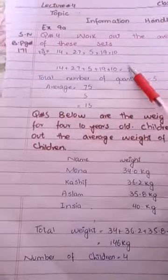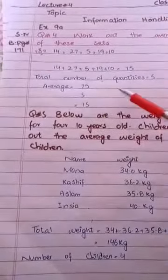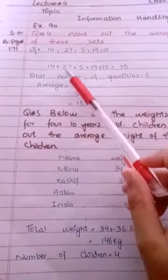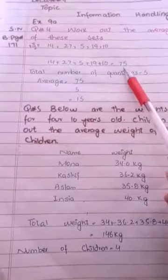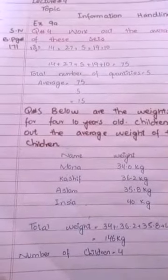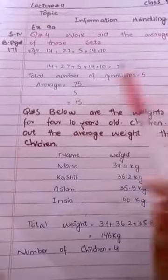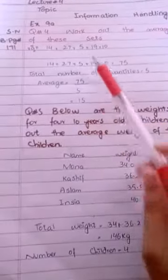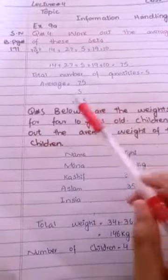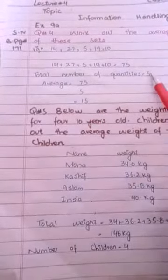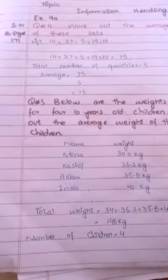Average find out करने के लिए जो हमारे पास quantities हैं उन्हें add करेंगे और जितनी number of quantities हैं उस पर divide कर देंगे। 40 plus 27 plus 5 plus 19 plus 10 = 75। Total number of quantities: 1, 2, 3, 4, 5। 75 को 5 पर divide किया तो average आया 15।